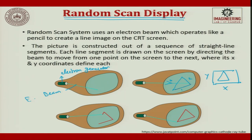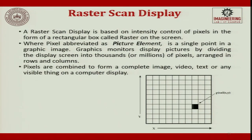Now we are getting into the graphics — how it is getting displayed. Your raster scan display is based on the intensity control of pixels in the form of a rectangle, called raster, on the screen. The entire screen is divided into several small pixels. A raster scan display is based on intensity control of pixels in the form of a rectangular box called raster. Pixel abbreviates as picture element — a pixel is a single point in a graphic image.